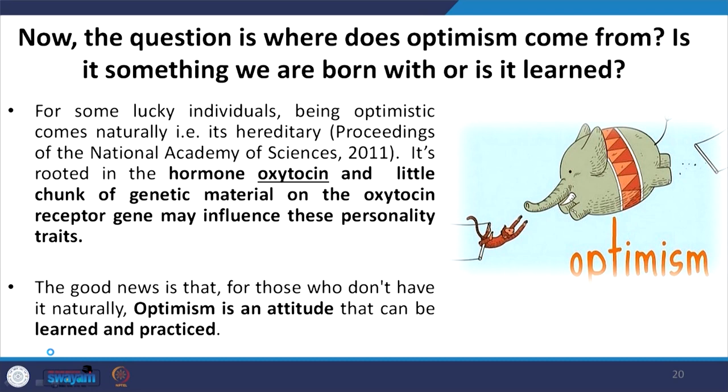The good news is that for those who do not have optimism naturally, optimism is an attitude — and attitude can be learned, practiced, and developed. So do not worry if your oxytocin level is low; with time, you can learn and practice optimism.